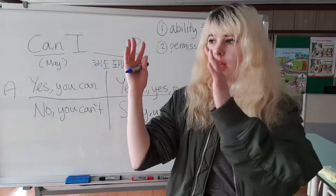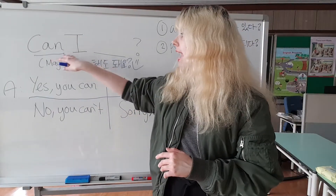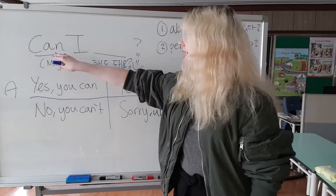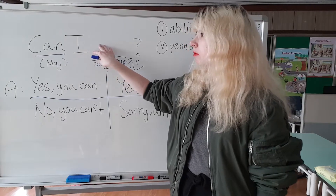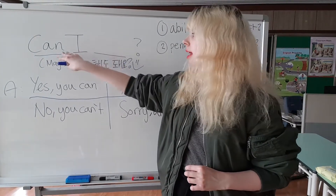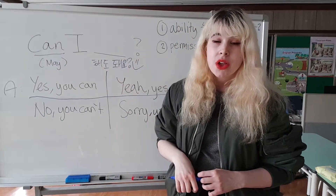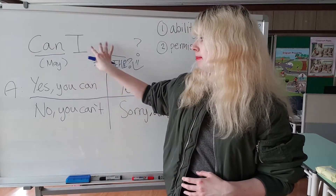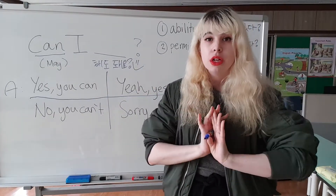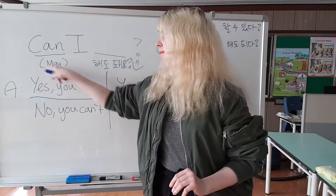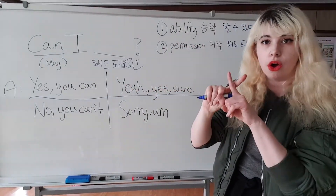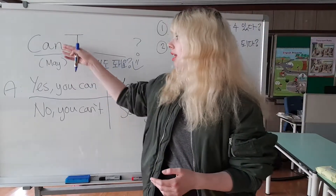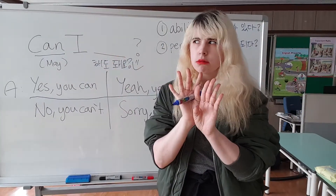So how do we say 해도 돼요 in English? We say 'Can I blah blah blah.' For example: Can I drink some water? 물 마셔도 돼요. Now there is another word we can use, which is 'may.' May I blah blah blah. 이 뜻이는 비슷해요. Originally, 'may' was only for permission, but now 'can' is also used for permission, so they are similar.